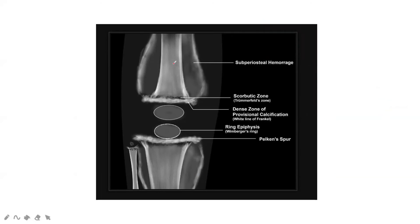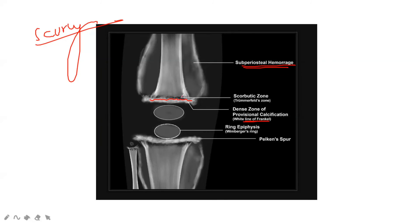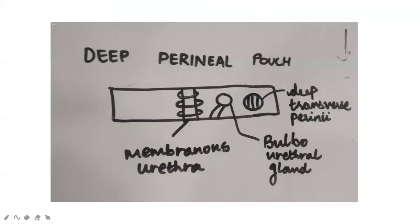This image is not related to anatomy but is a scurvy image. The radiographic features are: subperiosteal hemorrhage, dense provisional zone of calcification at the metaphyseal end — also called the white line of Frankel. Just above that, towards the diaphyseal side, is the scurbutic zone or Trümmerfeld zone with decreased bone density. There is also a ring epiphysis — the Wimberger ring surrounding the epiphysis — and outgrowths from bone called pelican spurs.